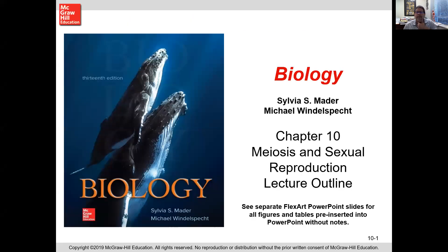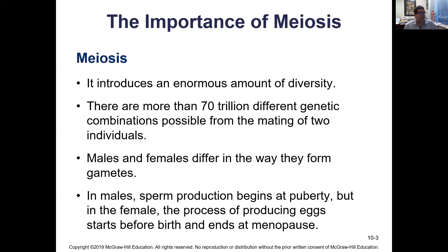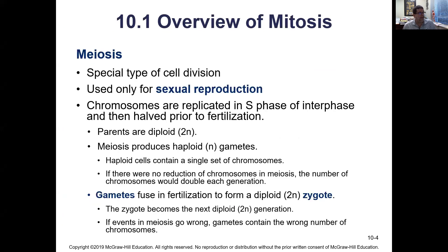This is chapter 10 on meiosis and sexual reproduction. Meiosis is one of my favorite chapters because we're looking at a type of nuclear division where we're going to cut the chromosome numbers in half. We'll see over 70 trillion combinations that can be created from the mating of two individuals. In meiosis we'll have a prophase, metaphase, anaphase, and telophase — but with a double division.